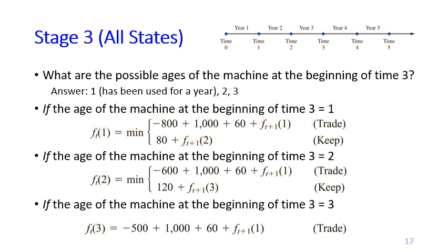The recursion formula for stage three is exactly the same. You use the values of F4(1), F4(2), and F4(3) to get F3(1), F3(2), and F3(3). When you have a curly bracket with two possible decisions, you always pick the one that gives the smallest cost, since we want to minimize cost, and place an asterisk on that optimal decision.